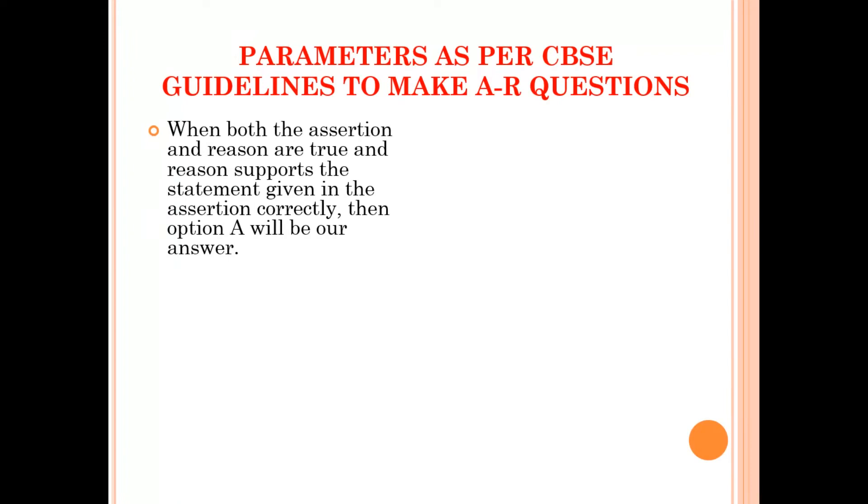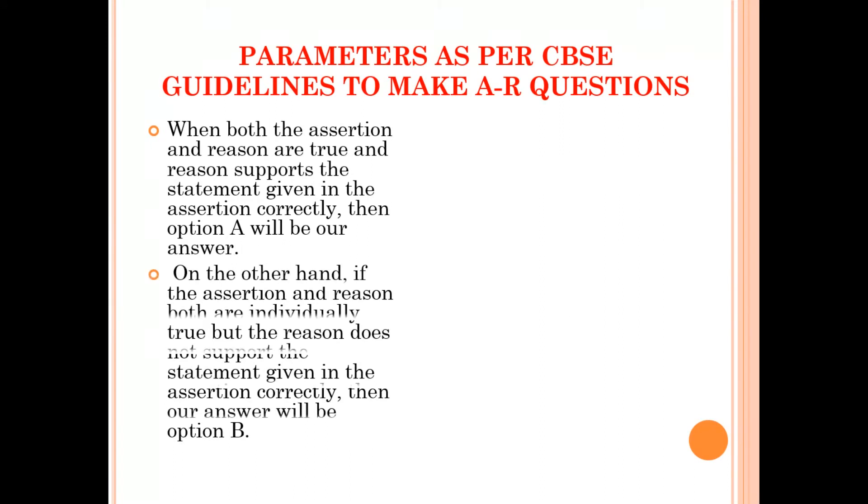If both the assertion and reason are true and reason supports the statement given in the assertion correctly, then option A will be the answer. If the assertion and reason both are individually true but the reason does not support the statement given in the assertion correctly, then the answer will be option B.